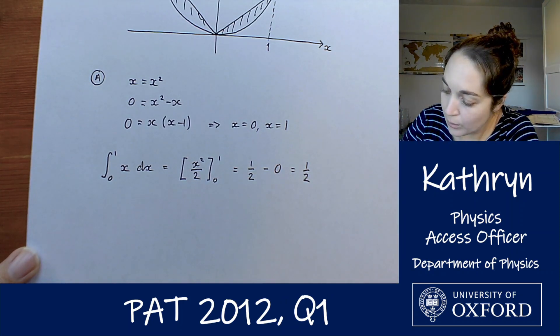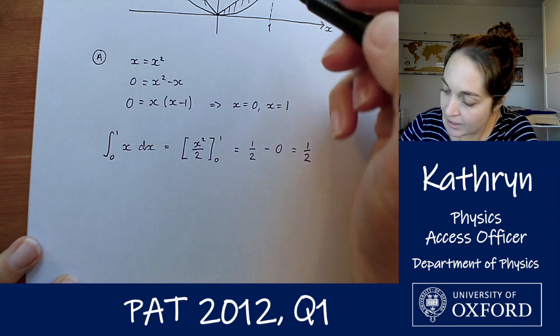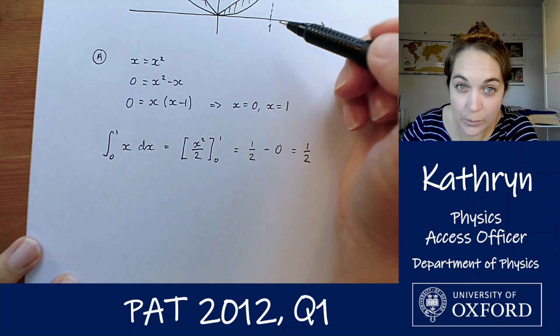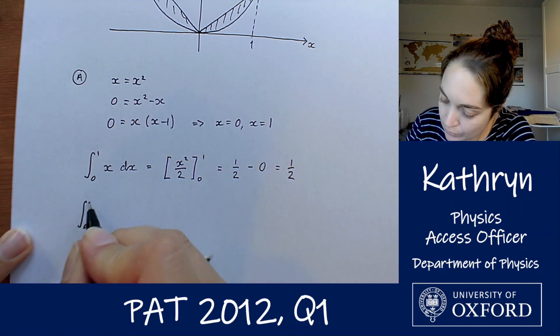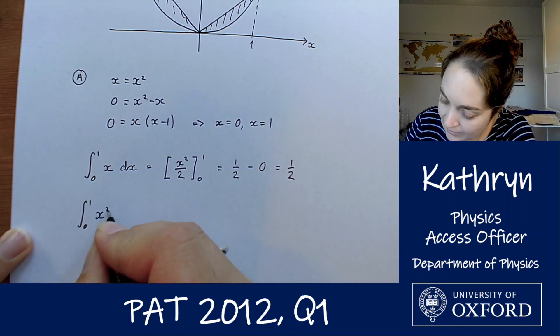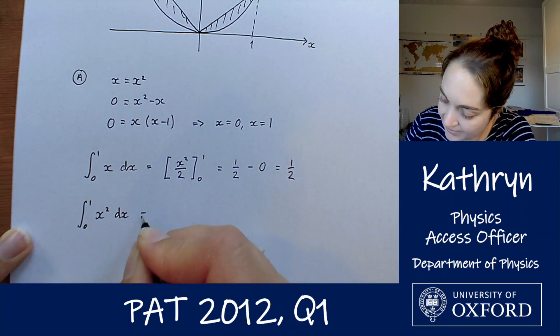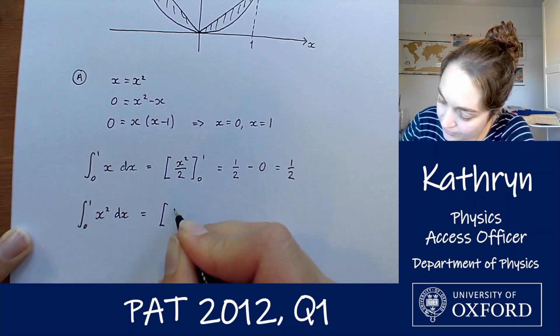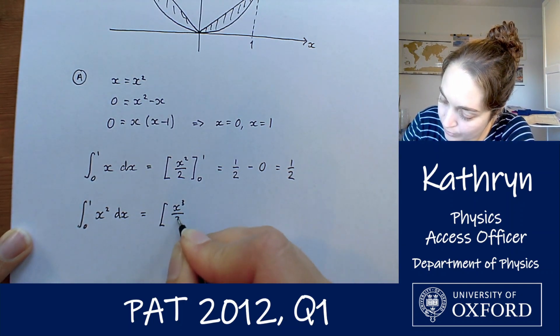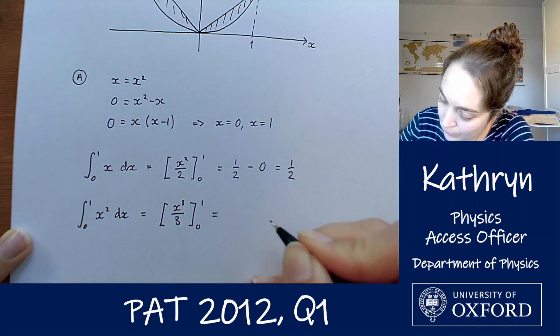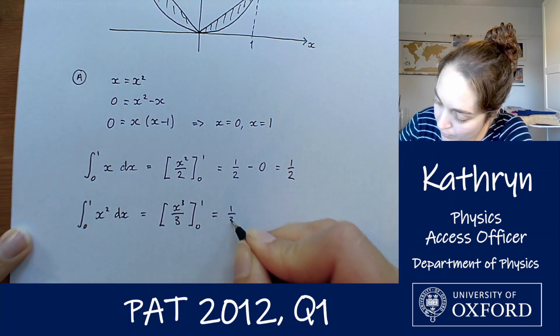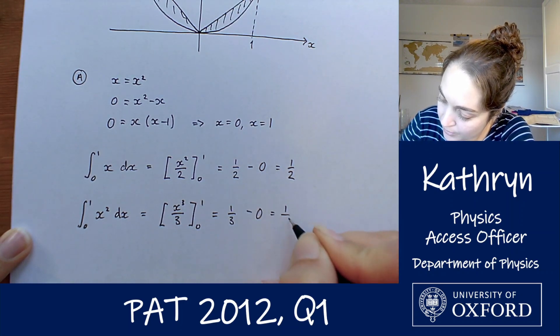Then we want the area under y equals x squared. So then we want the integral from 0 to 1 of x squared with respect to x, and that is going to give us x cubed over 3, from, again, from 0 to 1, which is going to be 1 third minus 0, which equals 1 third.